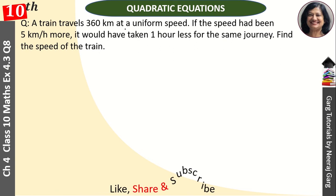A train travels 360 km at a uniform speed. If the speed had been 5 km per hour more, it would have taken 1 hour less for the same journey. Find the speed of the train.